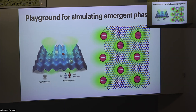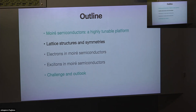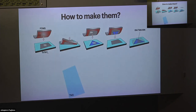Hopefully this gives an idea of why Moiré systems are interesting for simulating condensed matter physics phenomena. Now I will delve more into the lattice structure and symmetries in TMDs. Before that, I want to briefly mention how we make these structures. We use the pickup method: you use a sticky polymer to pick up one layer of 2D material from a substrate, then use that layer to pick up a second layer. You can repeat this many times to create an arbitrary heterostructure. The advantage is that the interface between layers does not see the polymer, giving a clean interface.